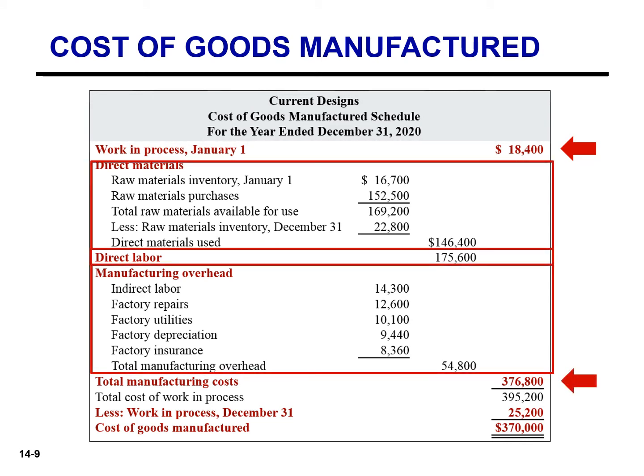Current Designs will incur manufacturing costs in the current year to complete the work that was in process on January 1st. They will complete their partially completed products and then incur additional manufacturing costs for the production of new orders. The sum of the direct materials, the direct labor, and the manufacturing overhead incurred in the current year is the total manufacturing cost for the current period.